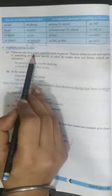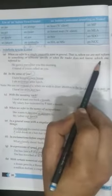Indefinite article is used when we refer to a single countable noun in general, that is when we are not referring to something or someone specific, or when the reader does not know which one is referred to.